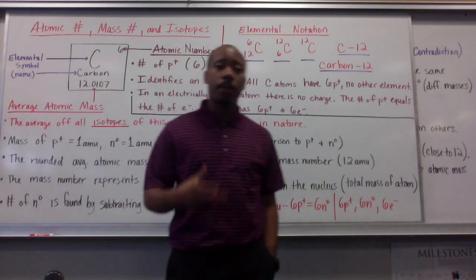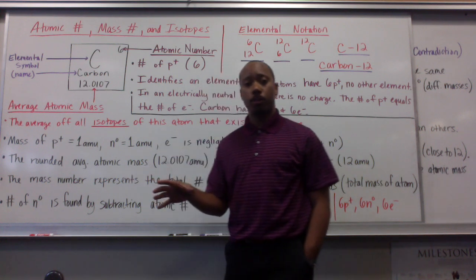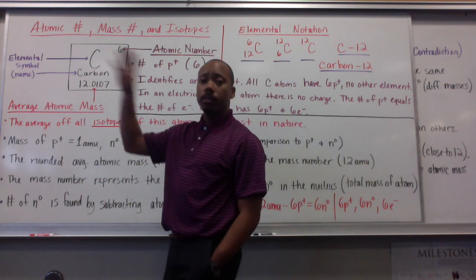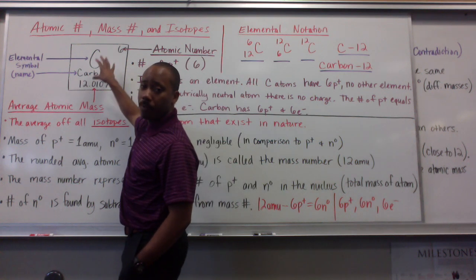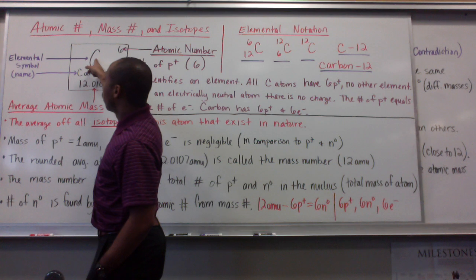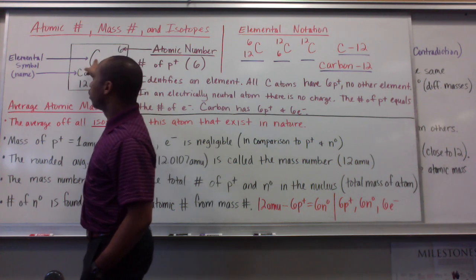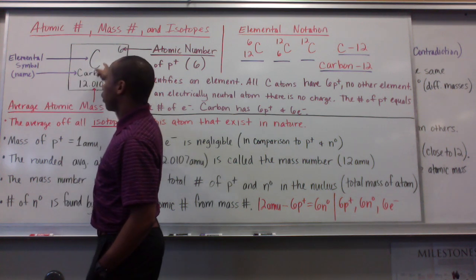So, we're going to talk about the atomic number, the mass number, and eventually isotopes. So, every symbol on the periodic table, or every element represented on the periodic table, has this type of notation. We have an atomic symbol here, or elemental symbol, with a name underneath or sometimes above.